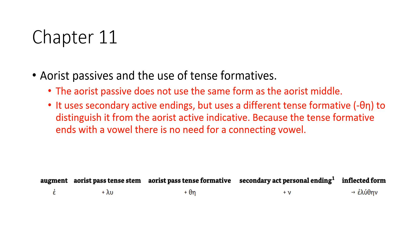Aorist passives and the use of tense formatives. The aorist passive does not use the same form as the aorist middle. The present middle and the imperfect middle use the same form as the present and imperfect passive, but the aorist does not. It has a new form. It uses secondary active endings, but it uses a different tense formative, theta-eta, to distinguish it from the aorist active indicative.